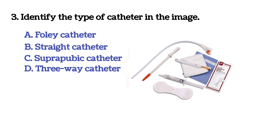Next question: identify the type of catheter in the image. Option A: Foley catheter. Option B: straight catheter. Option C: suprapubic catheter. Option D: three-way catheter. The answer is C, suprapubic catheter.